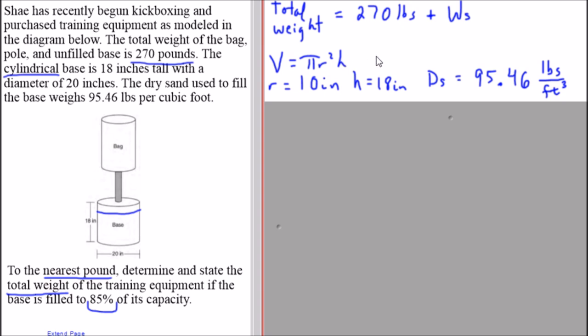We need to identify the radius and the height. Be careful, we were given the diameter is 20 inches, so to calculate the radius we just divide this quantity by two, and the height is 18 inches.